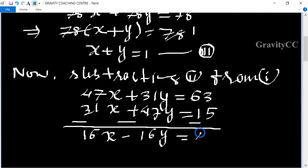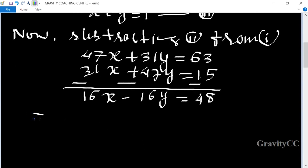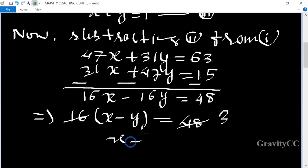This equals 48. Now we take 16 as a common factor, so x minus y equals 48 divided by 16. 16 times 3 is 48, so x minus y equals 3. Suppose this equation is the 4th equation.